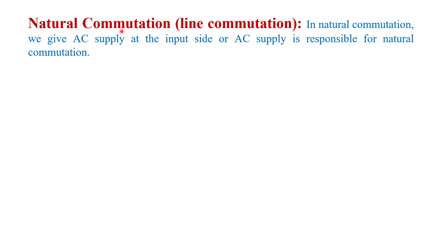Natural commutation is also called line commutation or self commutation. As the name suggests, in natural commutation the device is turned off naturally by itself. When we give AC supply at the input side, a reverse bias voltage appears across the device and the device turns off naturally. So AC supply is responsible for natural commutation. The device is self-commutated when reverse bias voltage appears across it.